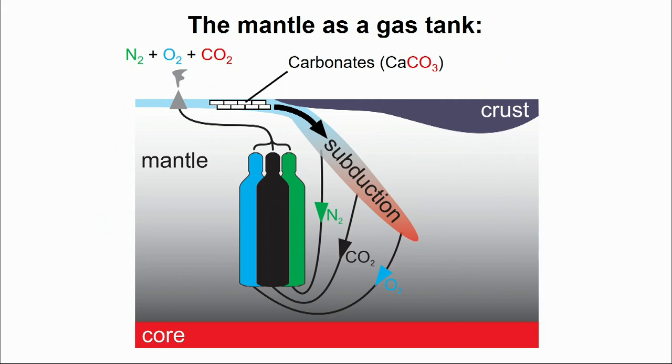Luckily on Earth we do have plate tectonics, which is very efficient in removing the CO2 from the atmosphere and putting it back into the mantle. It is the balance between the ingoing and outgoing fluxes of CO2 which has been one of the major focuses of the Deep Carbon Observatory in the past decade.